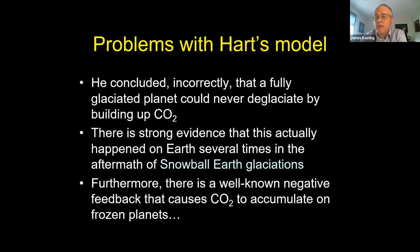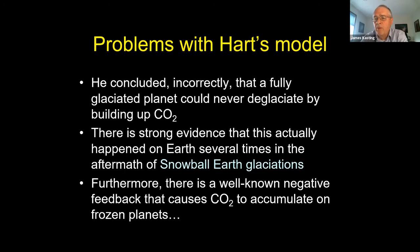There are problems with Hart's model. The biggest is that he concluded incorrectly that a fully glaciated planet could never deglaciate by building up CO2. In his greenhouse model, CO2 and water vapor could not allow escape. But even at the time, there were five or six different greenhouse models available and he picked the weakest one. Today, all of our 1D and 3D calculations show that you can glaciate the Earth and escape from it with high CO2. There's good geologic evidence that the Earth actually went snowball two or three times in its history, escaping by buildup of CO2 — you can see this because there are cap carbonates on top of glacial deposits in Namibia.